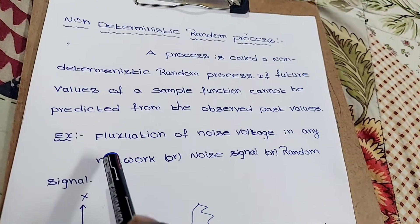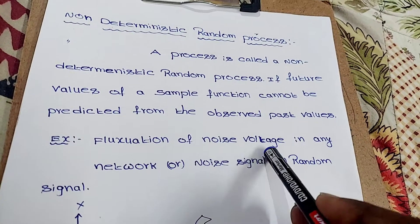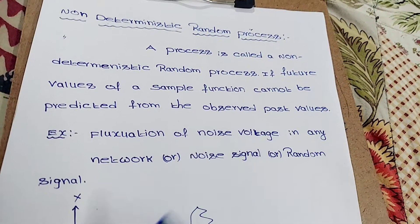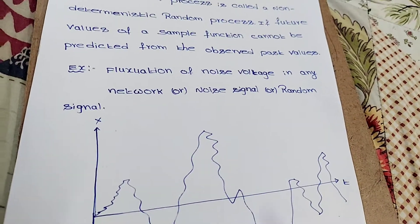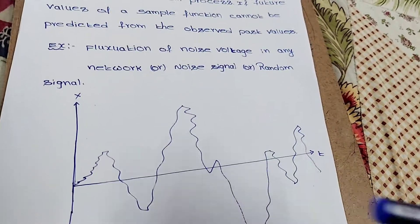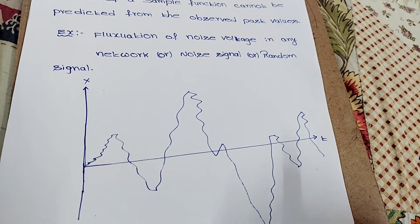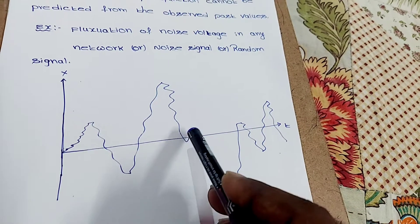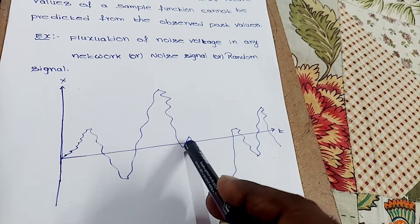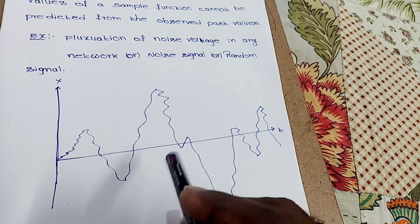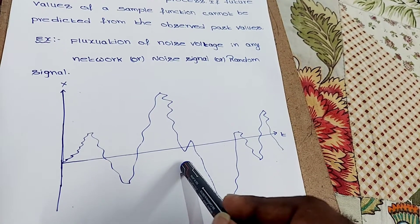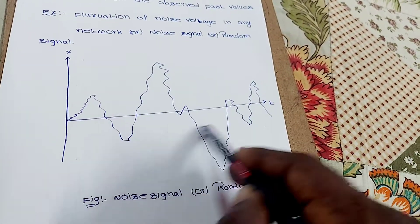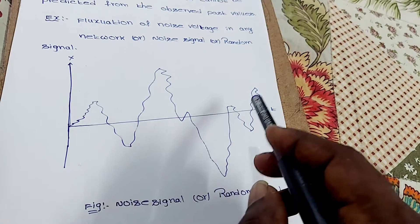An example of a non-deterministic random process is the fluctuation of noise voltage in any network, or a noise signal or random signal. A random signal is one whose nature we cannot predict. Future values of any sample function cannot be predicted by knowing past values — that is the non-deterministic signal.